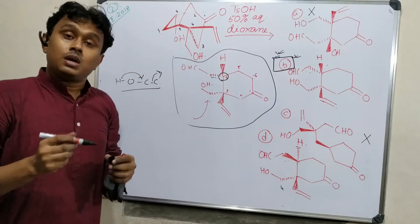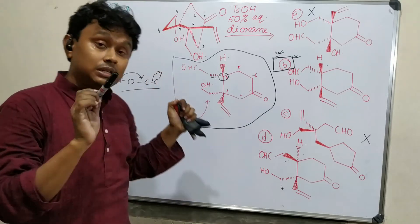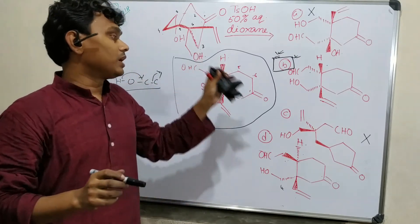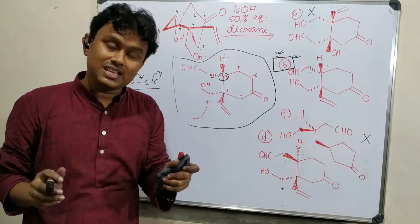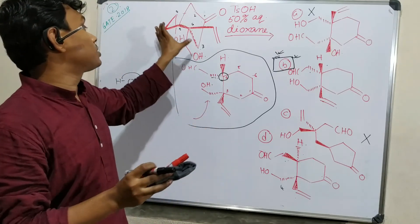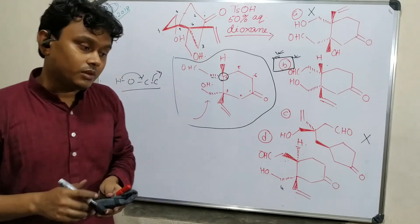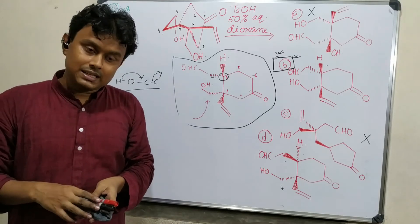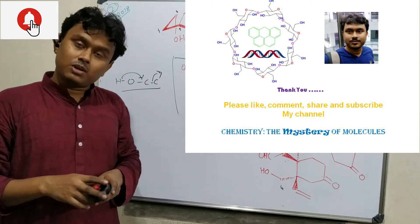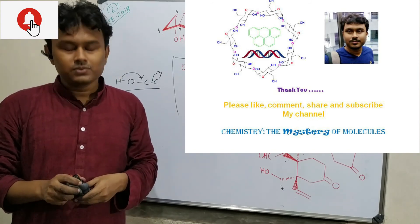Within one minute you can solve this difficult problem. What is essential: a cool mind, proper understanding, and drawing properly in your notebook with a pencil and rubber. Apparently it looks very difficult, although it is not. Please practice drawing proper structures of cyclohexane chair conformations. This is the end of the video — if you like my lecture please give a like, share this video so others also benefit, and subscribe to Chemistry: The Mystery of Molecules and press the bell icon.